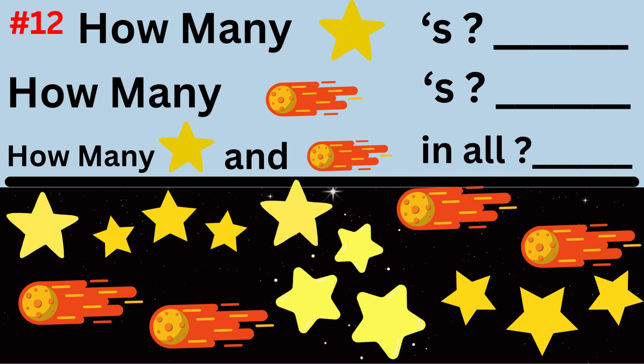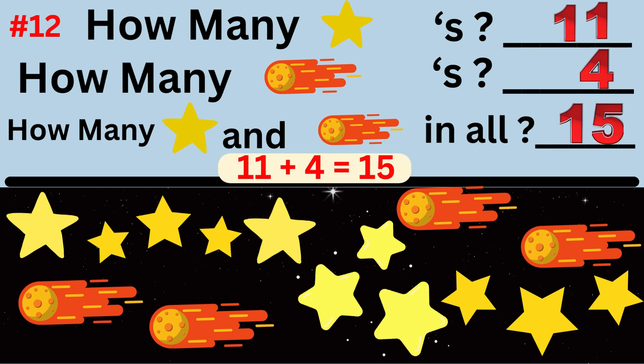Word problem number twelve asks: how many stars are there, how many comets are there, and how many stars and comets in all? The answer is there are 11 stars and four comets, so there are a total of 15 stars and comets in all. The number sentence is 11 plus 4 equals 15.